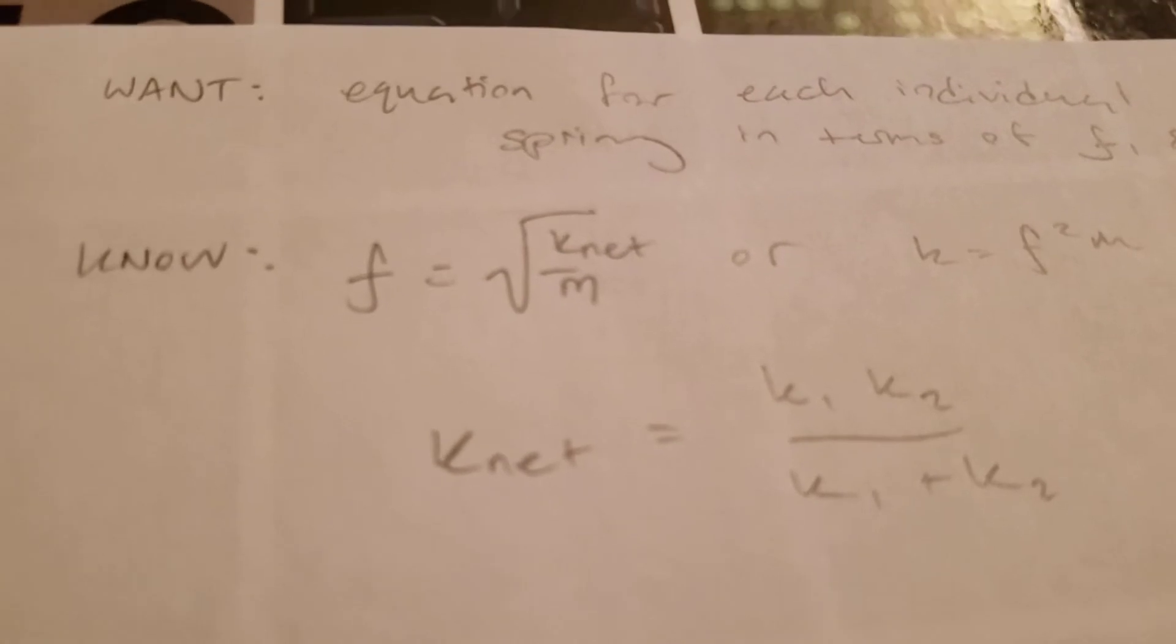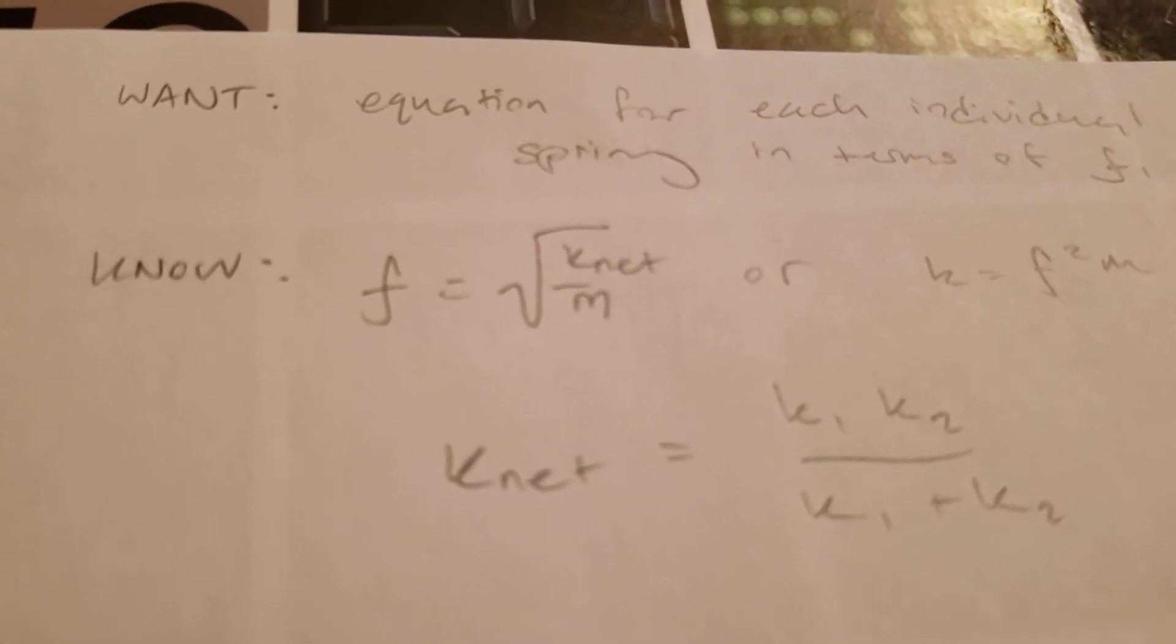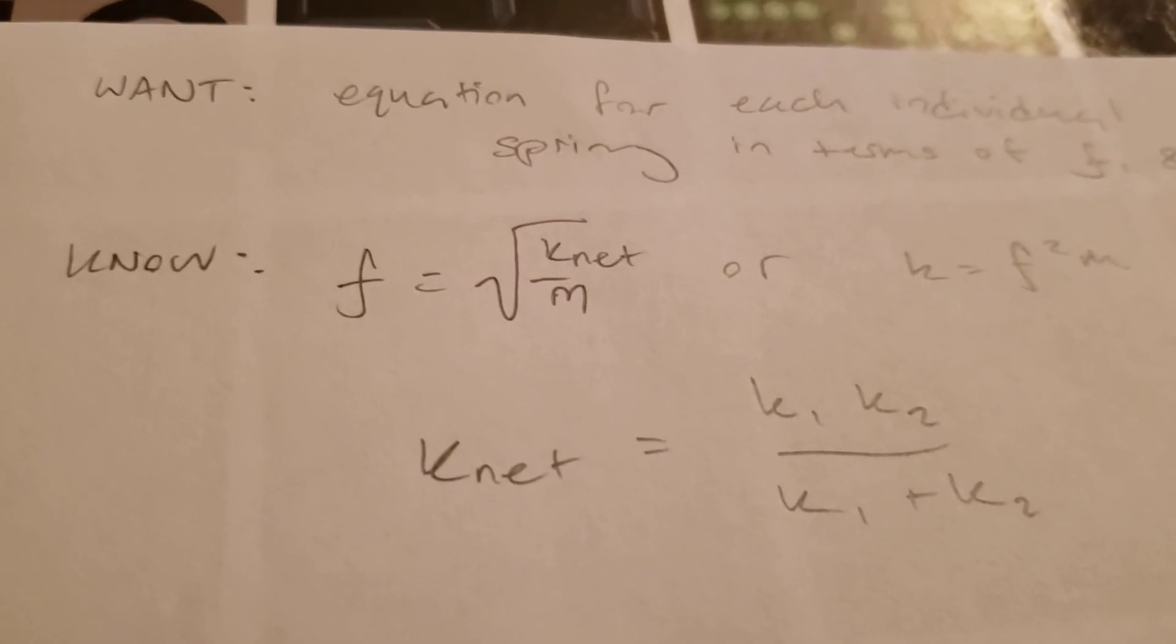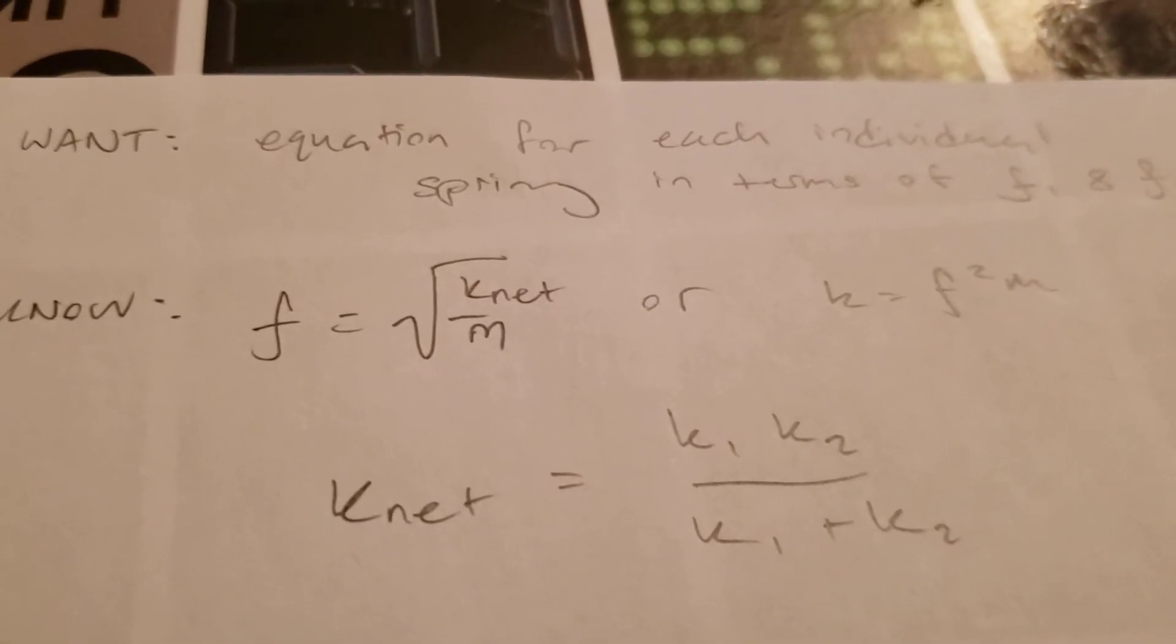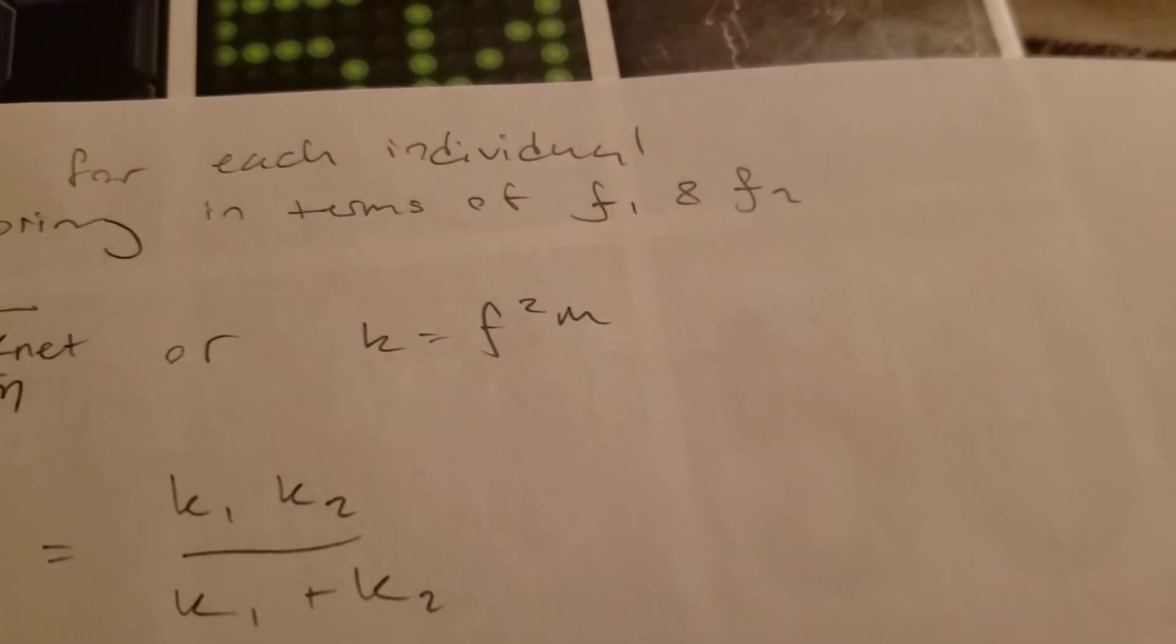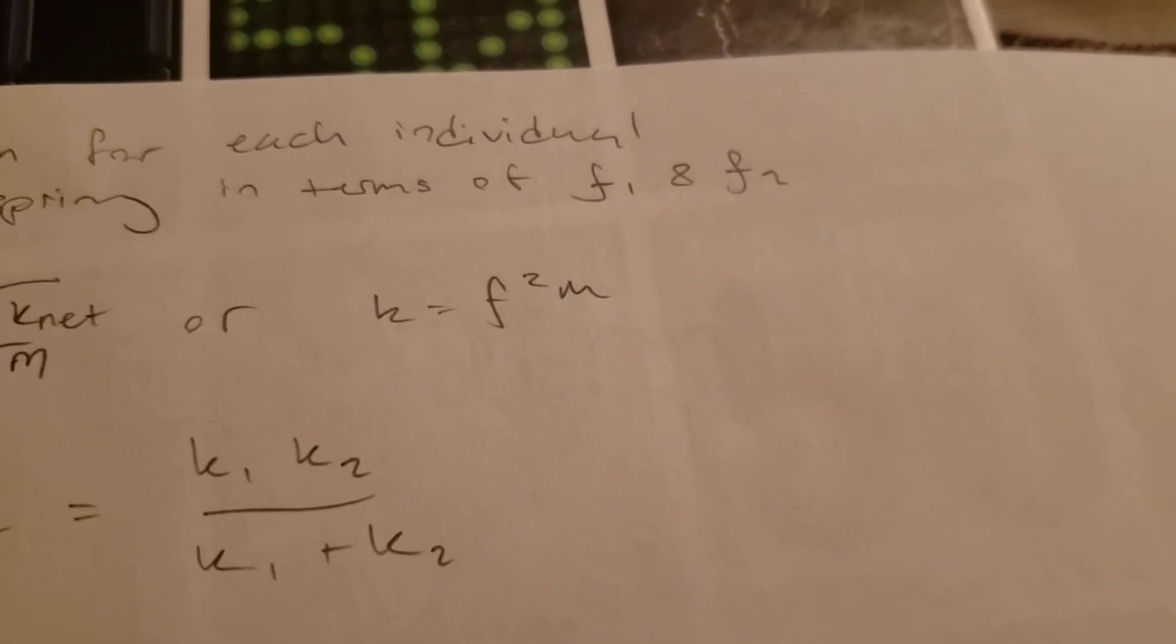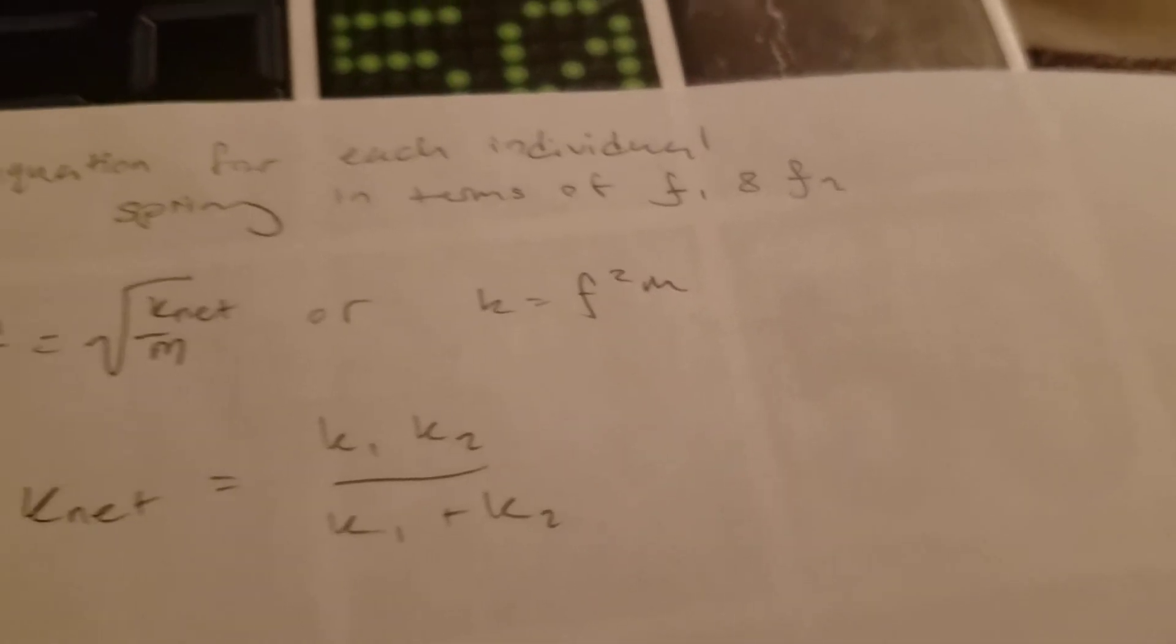So we know generally that frequency is equal to the spring constant, specifically for this problem, the net spring constant over m, all that's square rooted. And we also know this is just the same equation reorganized, but we know that k is equal to frequency squared times m.